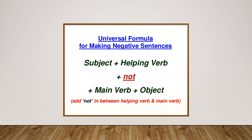Second general rule: the word NOT is jointly used with the modal verb 'can.' For example, 'You can solve this problem' becomes 'You cannot solve this problem.' Third rule: if the helping verb consists of more than one word, NOT is placed after the first one. For example, 'They will be going by train' — here 'will' and 'be' are two helping verbs, so NOT goes between them: 'They will not be going by train.'